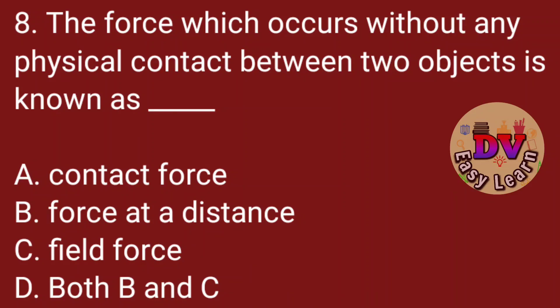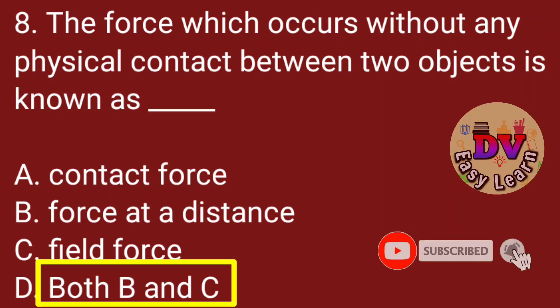Question number 8. The force which occurs without any physical contact between two objects is known as? Correct answer, both B and C: force at a distance or field force.